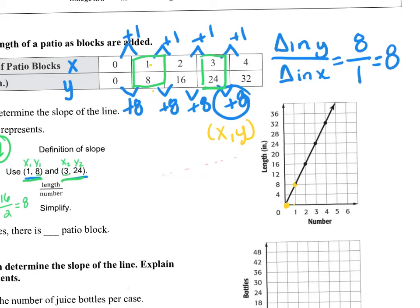Right? So, 1, 8, 2, 16, 3, 24, 4, 32. Do you see where they got the points from? So they graphed the points.